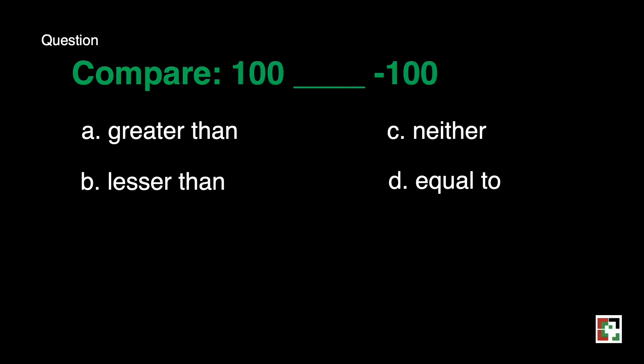Next, compare 100 blank negative 100. A, greater than. B, lesser than. C, neither. D, equal to. The answer is greater than. Just like what I said a while ago, all positive numbers are always greater compared to the negative numbers.